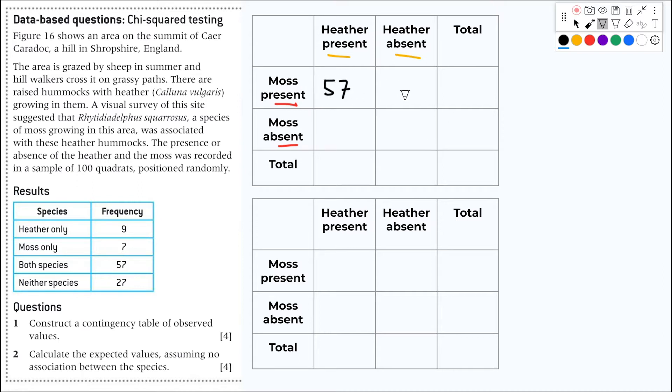Same here, moss is present but heather is not, that means moss only, and the total will be 57 plus 7, that's 64 quadrants where I saw moss. I saw the moss in 64 quadrants total. Here we have heather present but no moss, that means heather only, 9 quadrants.